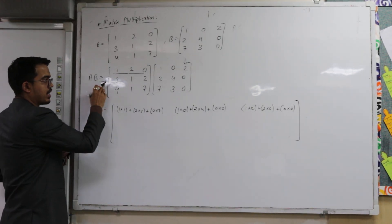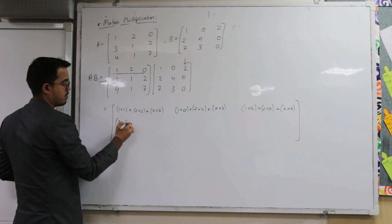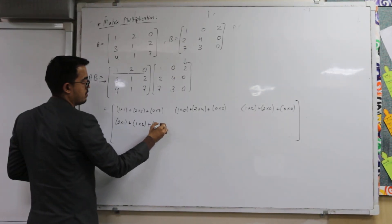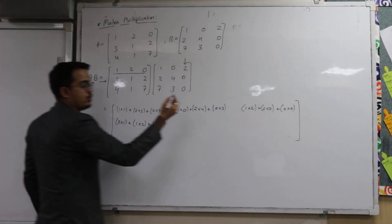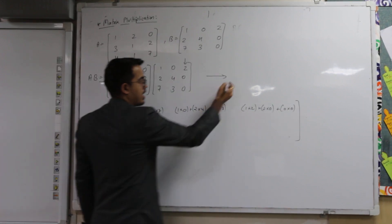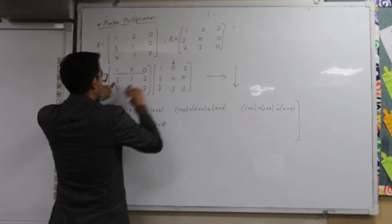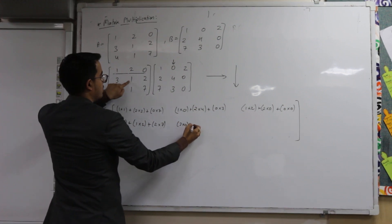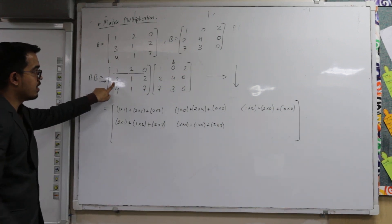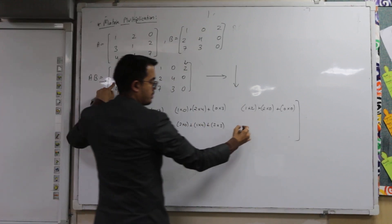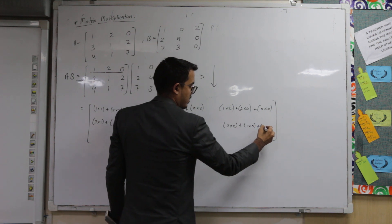Now I will move to the second row. Second row, first column: 3×1 plus 1×2 plus 2×7. Remember the sequence — go right-hand side in the first matrix and downwards in the second matrix. Second row, second column: 3×0 plus 1×4 plus 2×3. Then the third column: 3×2 plus 1×0 plus 2×0.